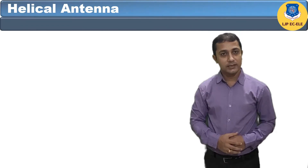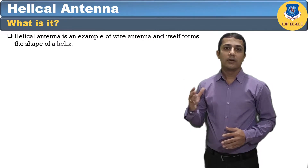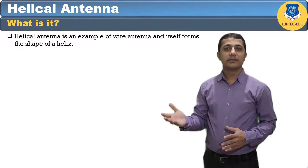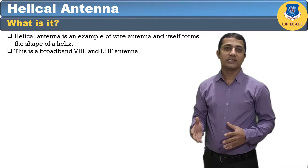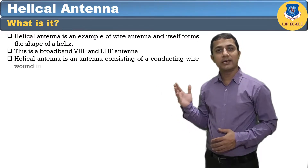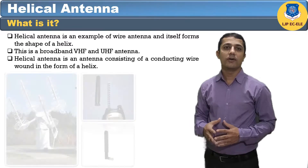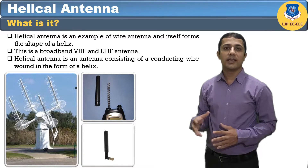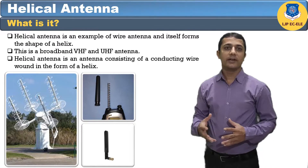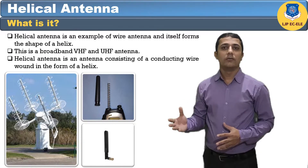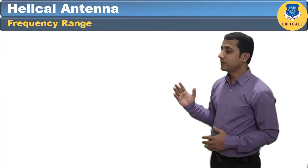The helical antenna is an example of a wire antenna and itself forms the shape of a helix. It is a broadband VHF and UHF antenna constructed of a conducting wire wound in the form of a helix. In most cases, helical antennas are mounted over a ground plane, and the feed line is connected between the bottom of the helix and the ground plane.